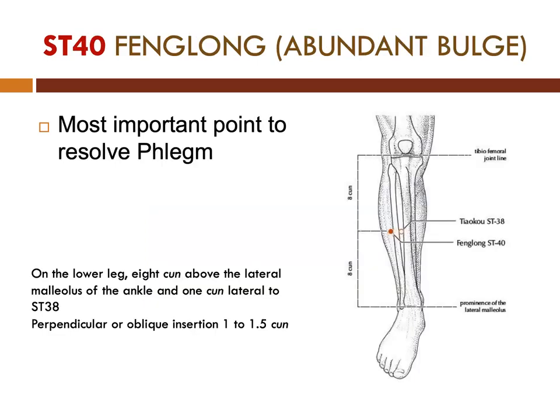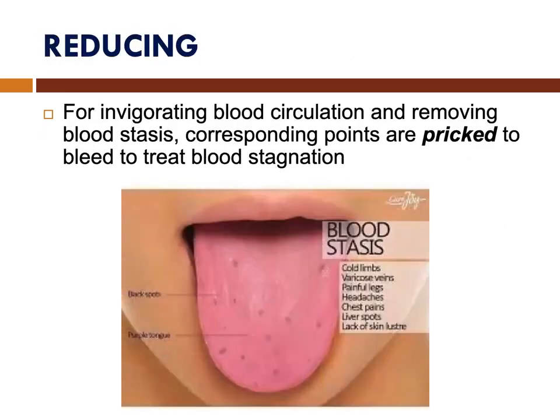The next point is Stomach 40, the most important point to resolve phlegm. To locate this point on the lower leg: it is 8 cun above the lateral malleolus of the ankle and 1 cun lateral to Stomach 38. It is basically midway between the tibiofemoral joint line and the prominence of the lateral malleolus. Perpendicular or oblique insertion is done here, 1 to 1.5 cun.